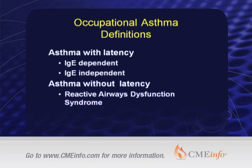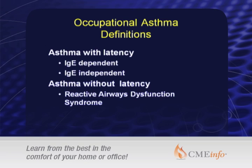Occupational asthma can be divided up into essentially two major forms: asthma with latency and asthma without latency. Asthma with latency can also be divided up into a couple of forms, and that is IgE dependent and IgE independent.